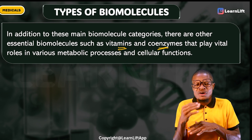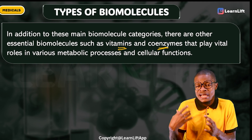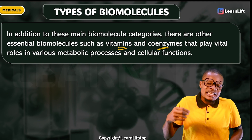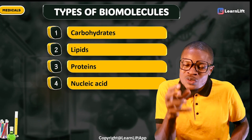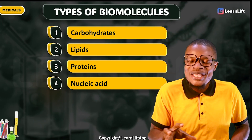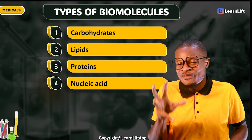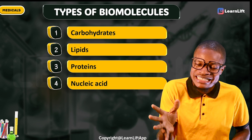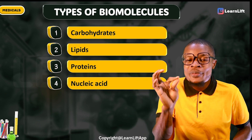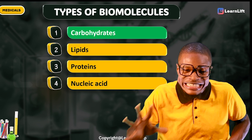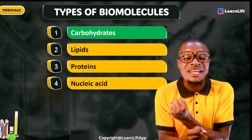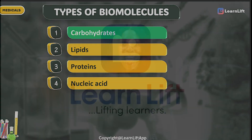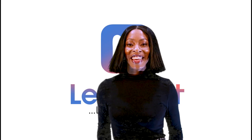Now that you understand that there are other essential biomolecules like your vitamins and coenzymes, it's time to start the journey into the main biomolecules — the four of them: carbohydrates, lipids, proteins, and nucleic acids. In our next class, I'm going to be showing you carbohydrates in detail as a biomolecule. Enjoy, guys — see you soon!